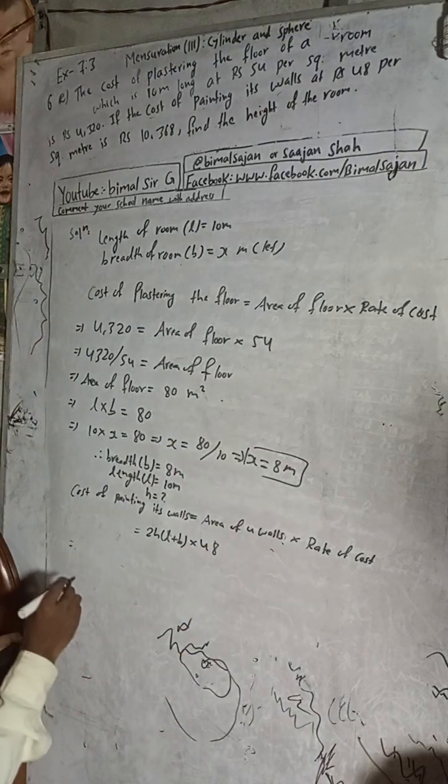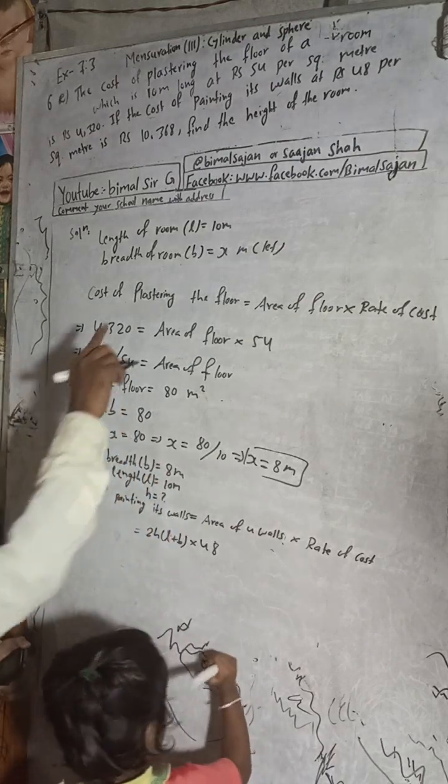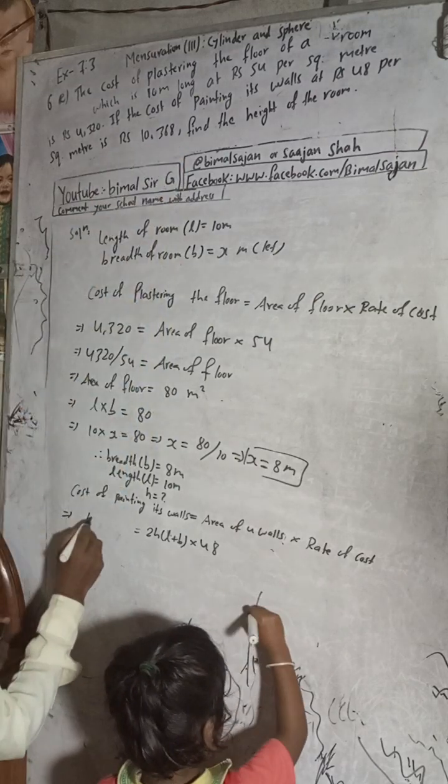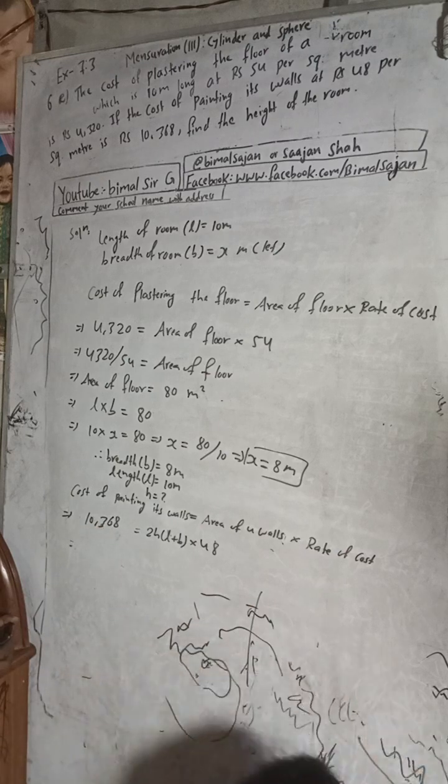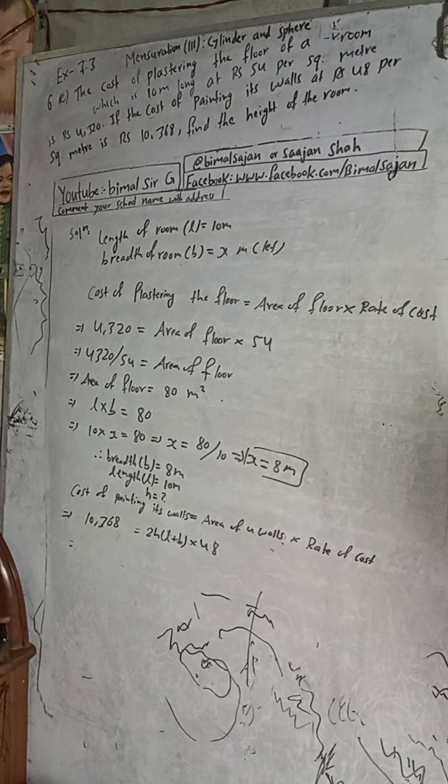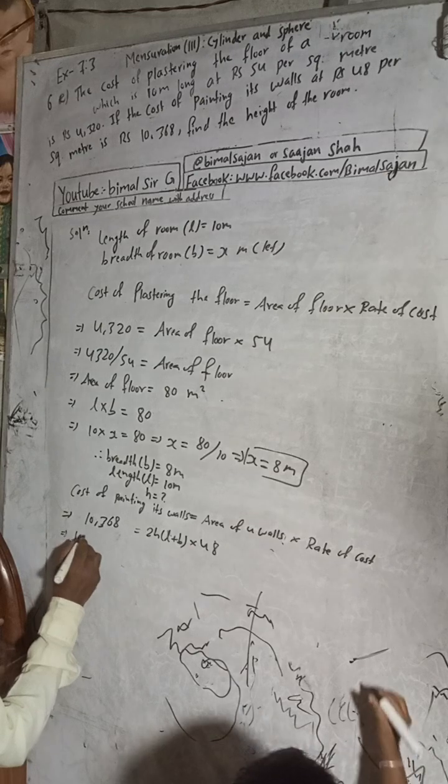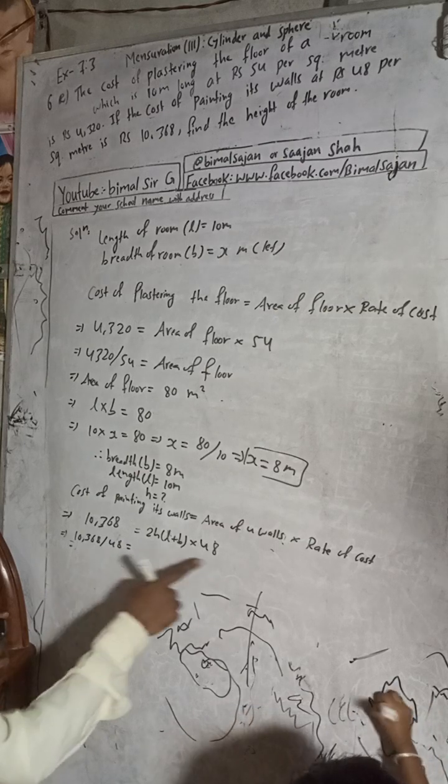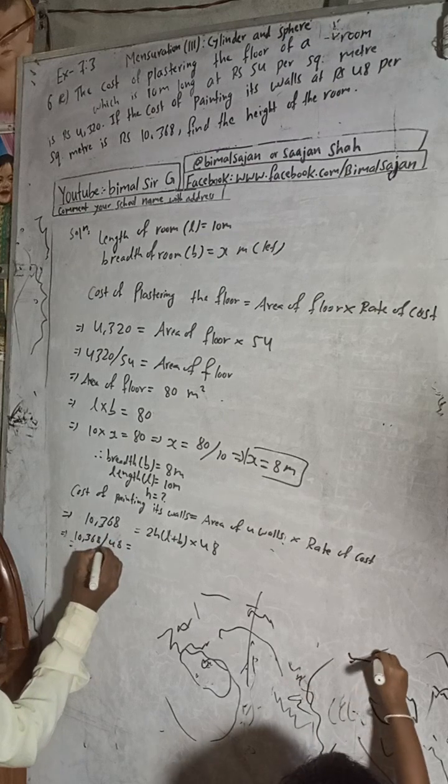This value is given, cost of painting is 10368. So 2H into (L + B) into 48 equals 10368. 10368 is multiplied on this side, so it goes to this side and it divides.